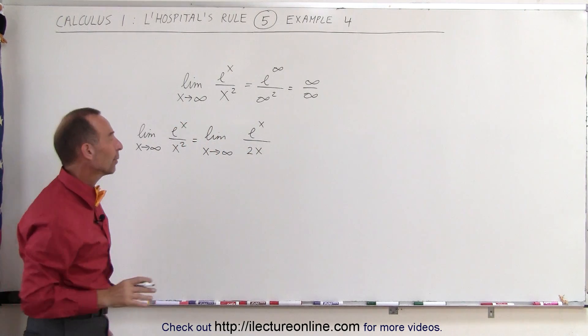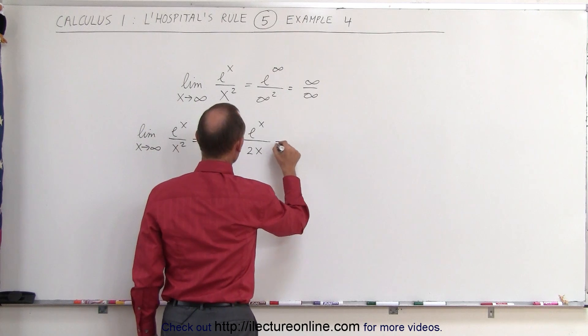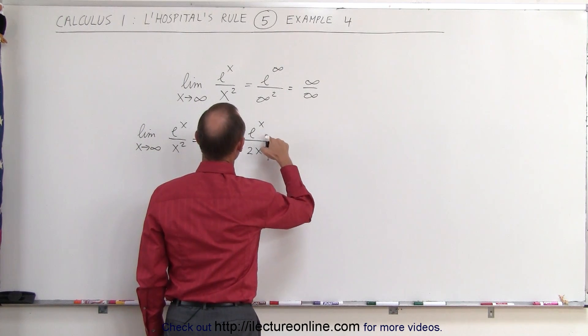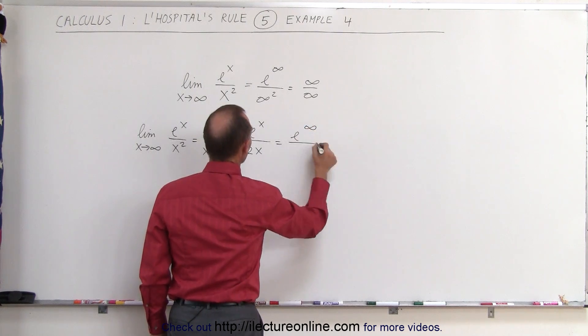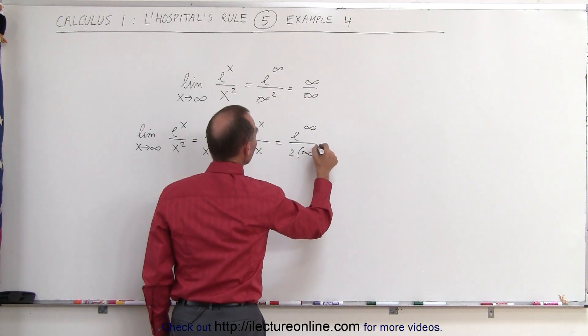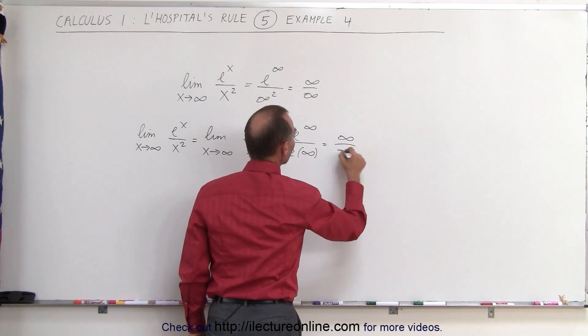If we now plug in the limit, let's see what happens. So this is equal to e to the infinity divided by 2 times infinity, and again we get infinity divided by infinity.